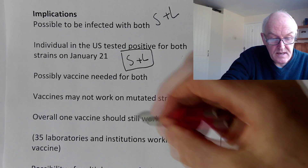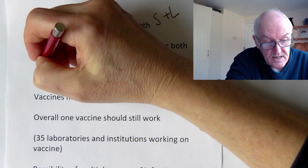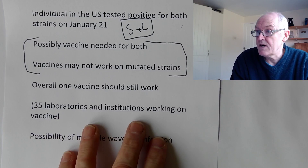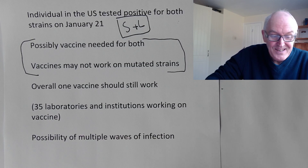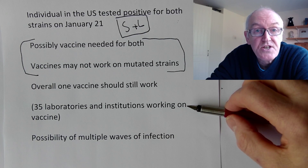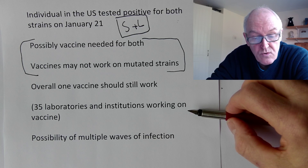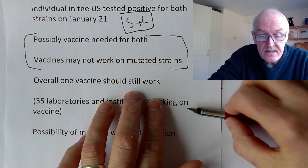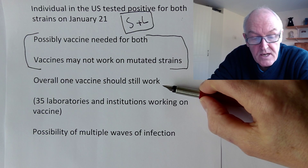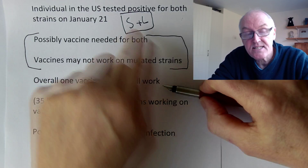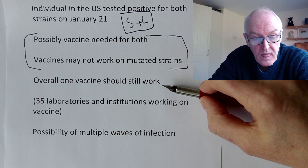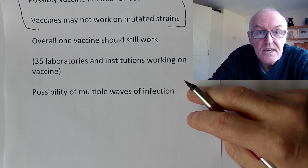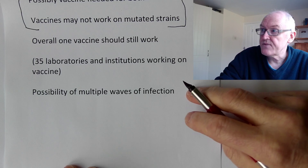Some people have said the vaccine may not work on mutated strains and that two vaccines might be needed instead of one. However, scientists in 35 laboratories and institutions around the world are designing vaccines that work on a very highly conserved part of the genome - a part that isn't changing very often. It's still likely that one vaccine will work for both strains. When we get the vaccine in 2021, we should be able to immunize people against both S and L strains.